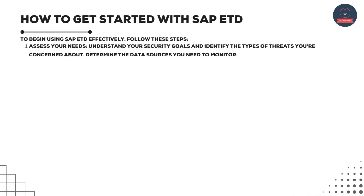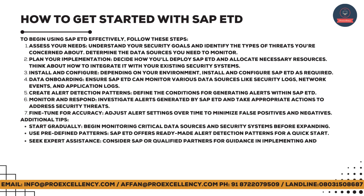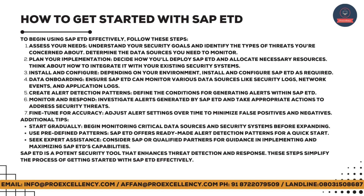How to get started with SAP ETD: To begin using SAP ETD effectively, follow these steps. Assess your needs — understand your security goals and identify the types of threats you're concerned about. Determine the data sources you need to monitor. Plan your implementation — decide how you'll deploy SAP ETD and allocate necessary resources, and think about how to integrate it with your existing security systems.